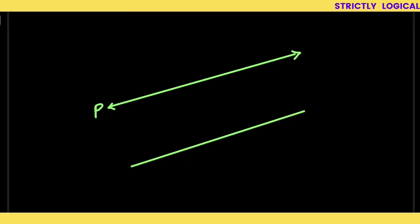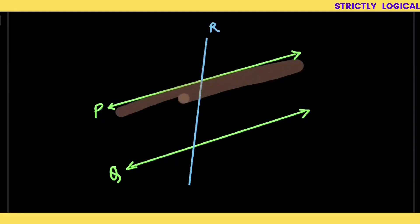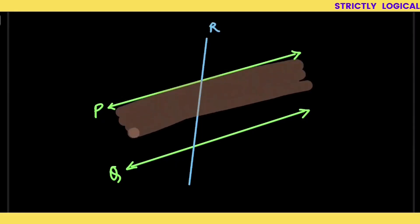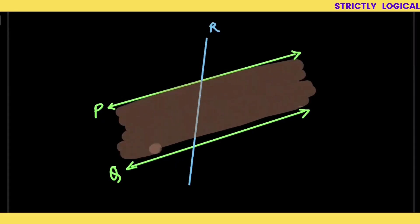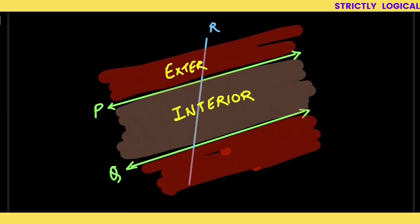Consider two parallel lines P and Q with a transversal R. We divide the areas created by the parallel lines into an interior area and an exterior one. This is the interior region and that is the exterior region.